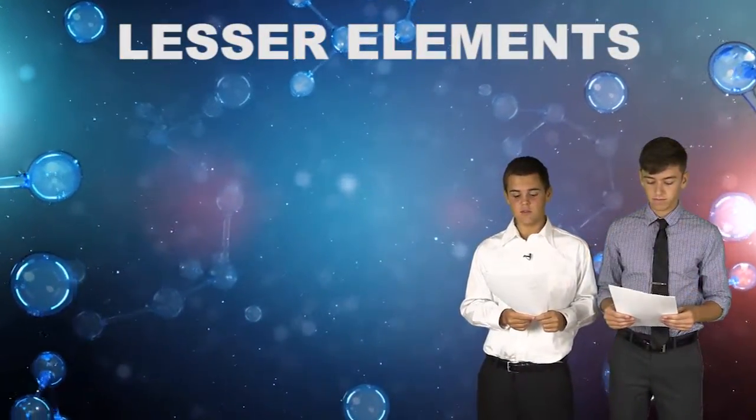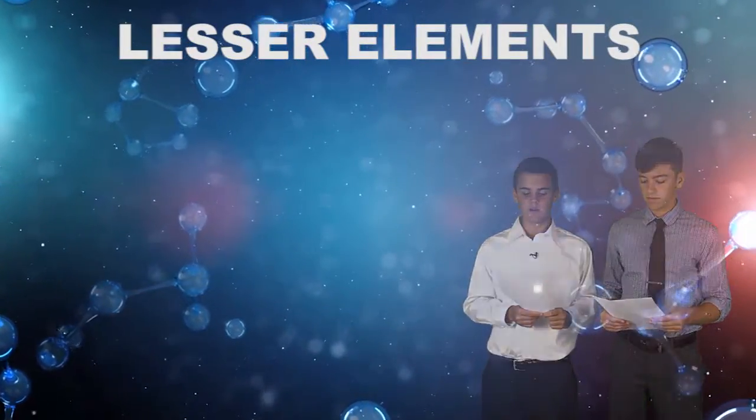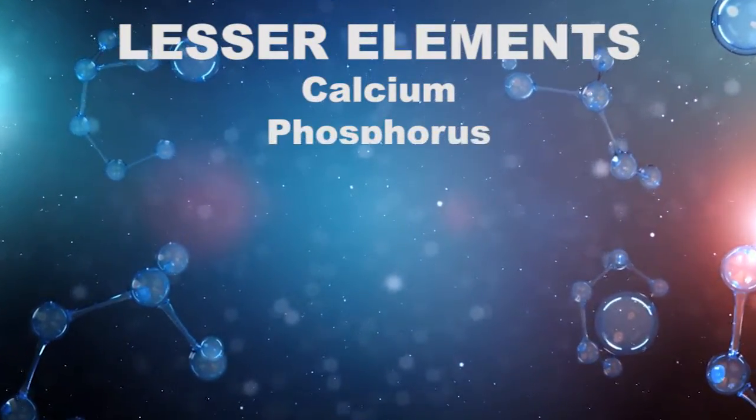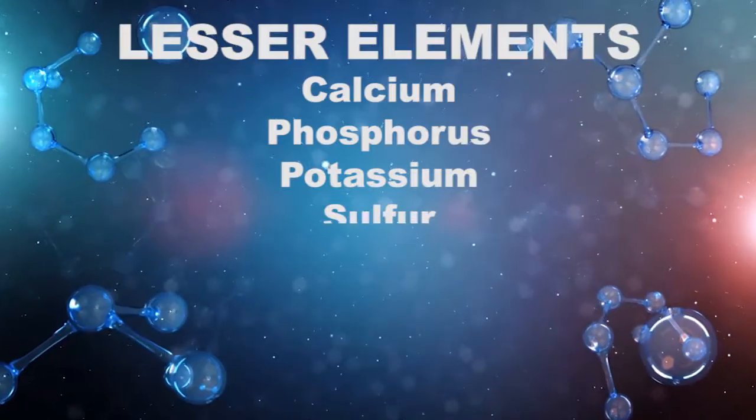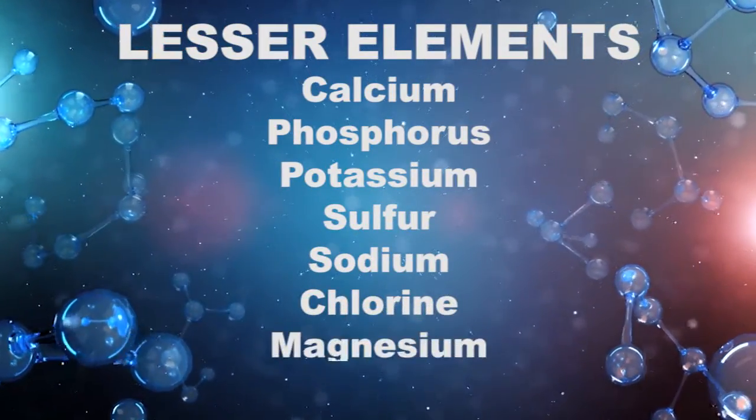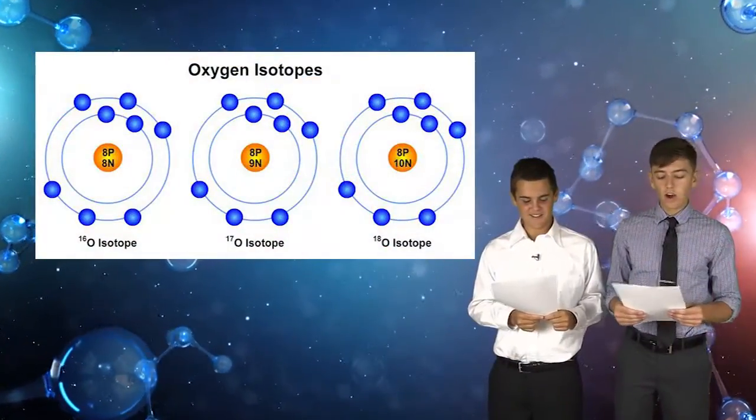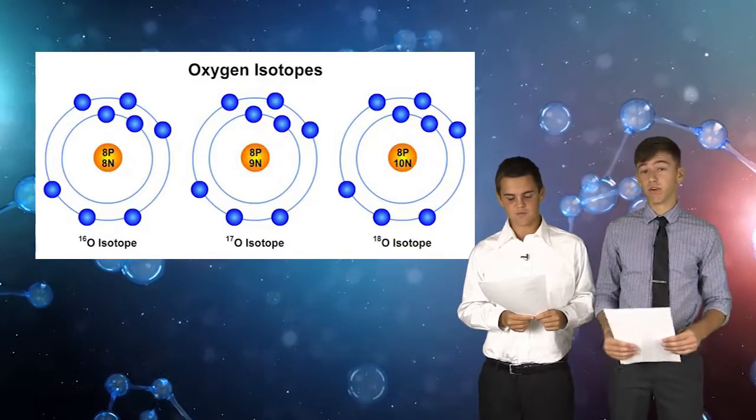The lesser elements make up 3.6% of the body. They are calcium, phosphorus, potassium, sulfur, sodium, chlorine, magnesium, and iron.